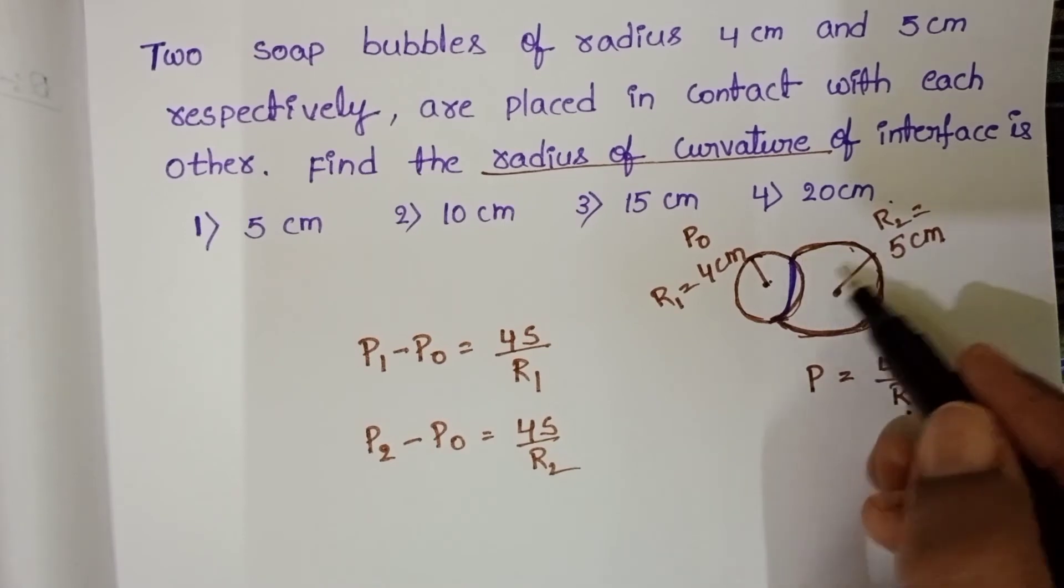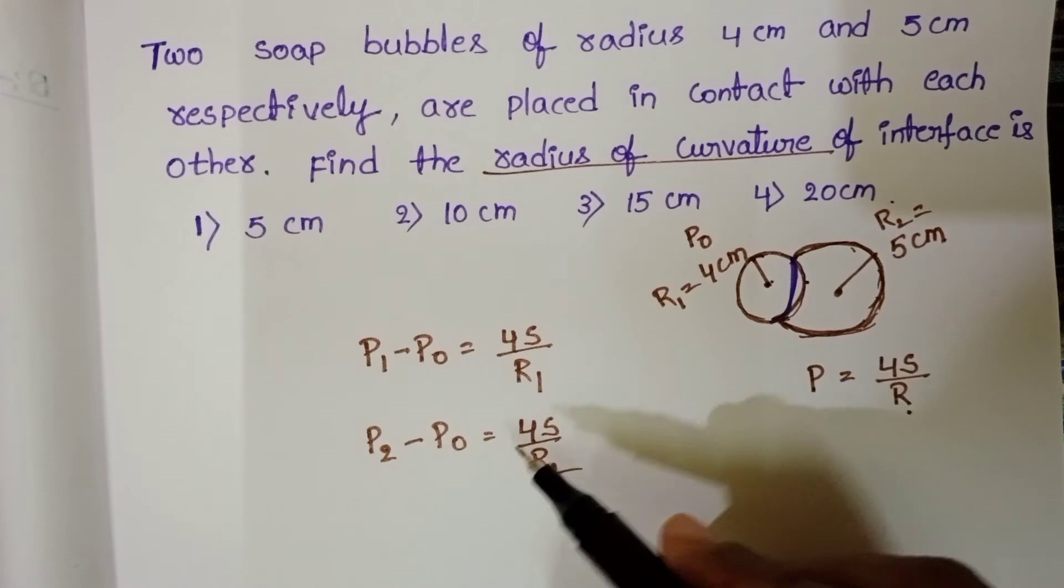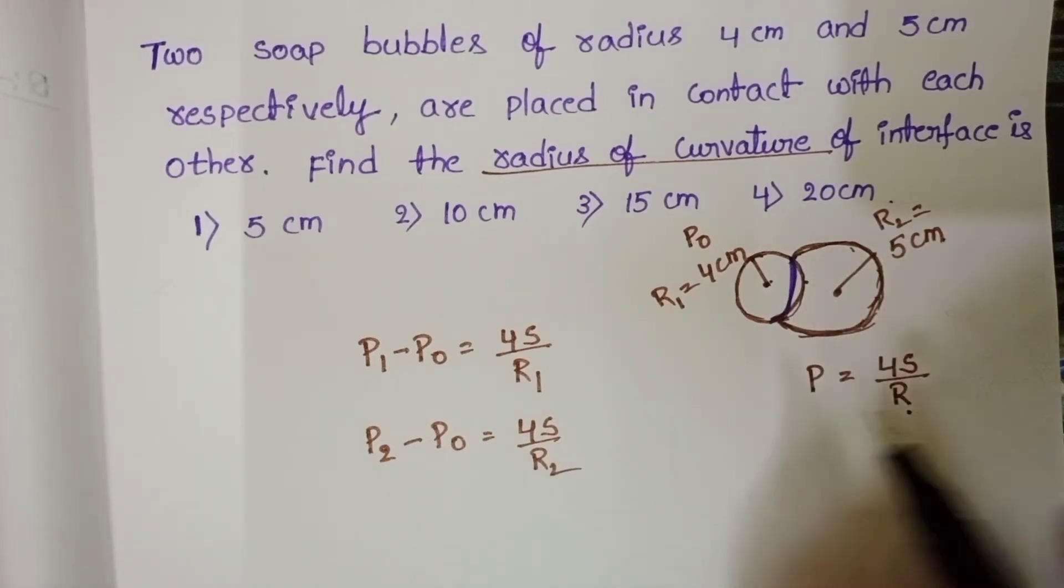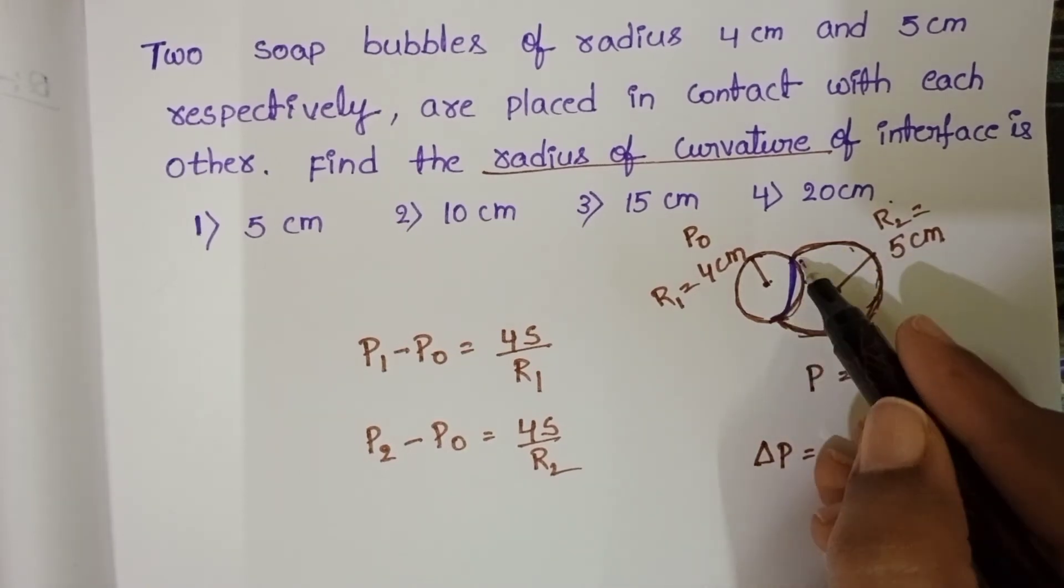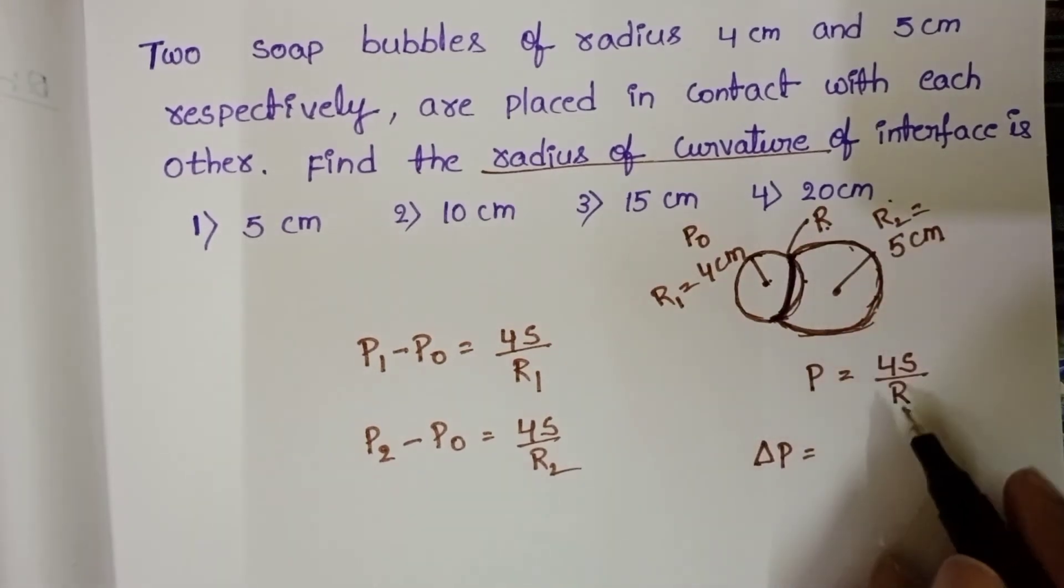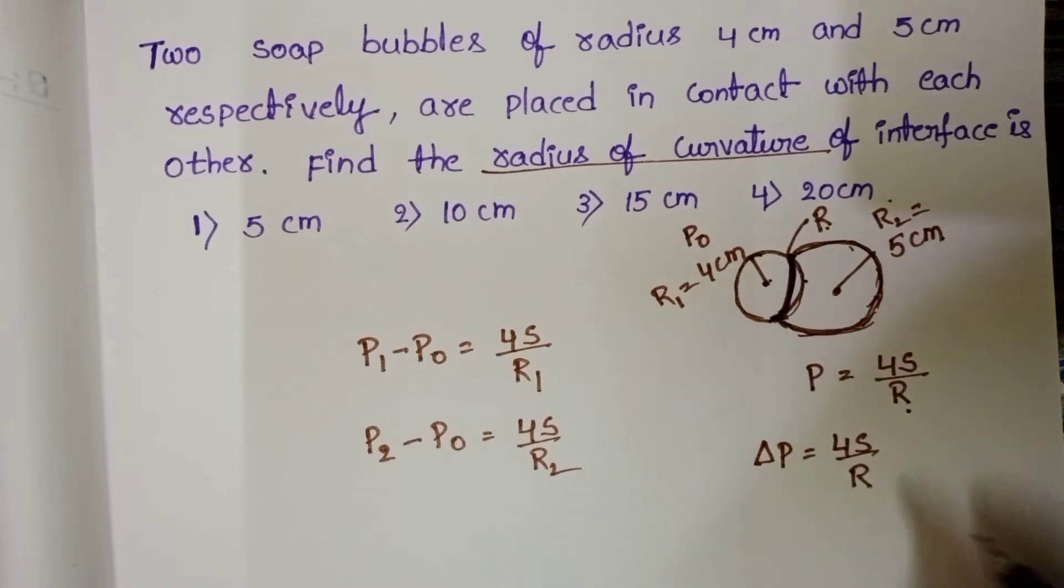These two bubbles are in contact. So one bubble exerts pressure on the second bubble, and at this interface it also creates pressure difference. That's why the radius of curvature of the interface changes. Let it be R. Delta P equals 4s by R. So we have to find the value of R.